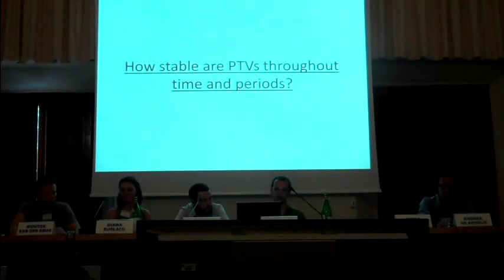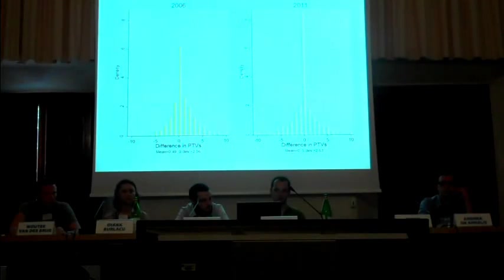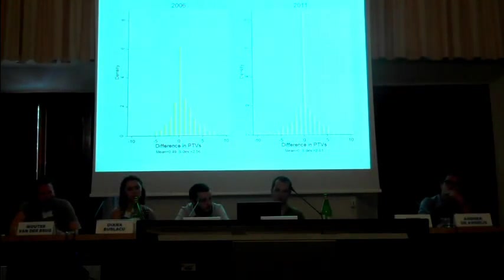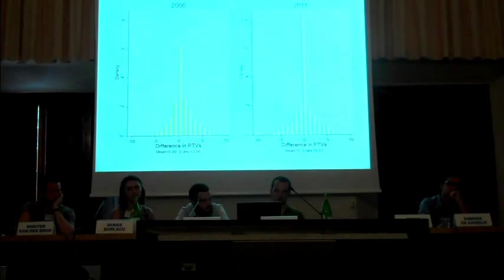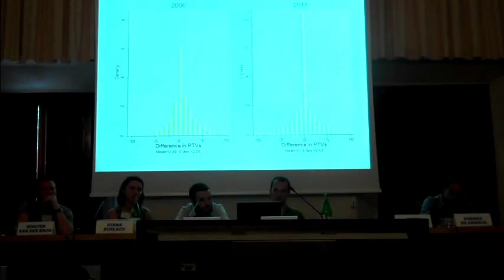Returning to the first question — how stable are PTV patterns at the individual level across time and different periods of the electoral cycle — we plot a difference variable: the PTV at time 2 minus the PTV at time 1. The distribution is more stable in 2011, which makes sense because PTVs are more stable when there is no election. Compared to 2006, when there is an election with a campaign period, there is more change, as we would expect since campaigns have effects.